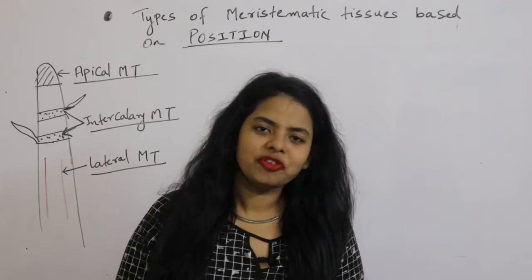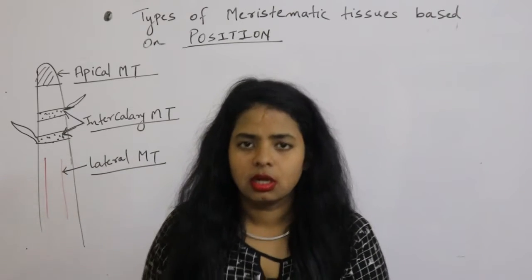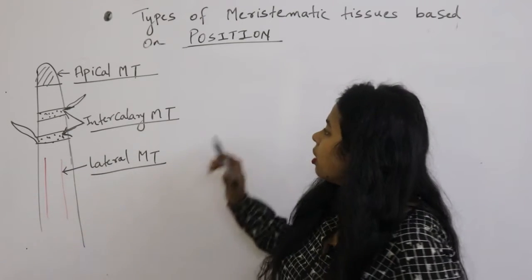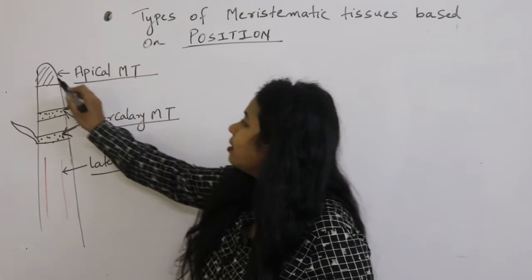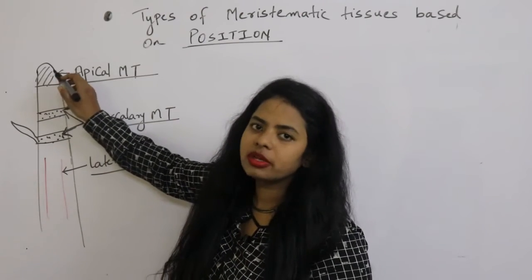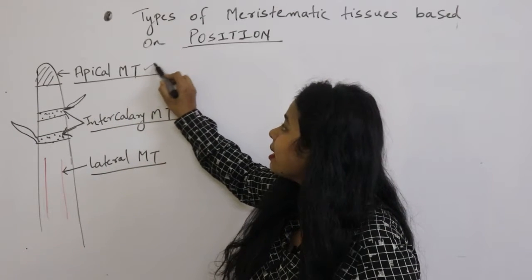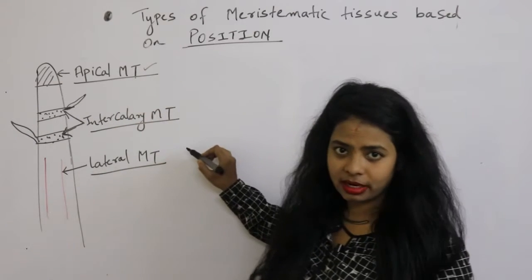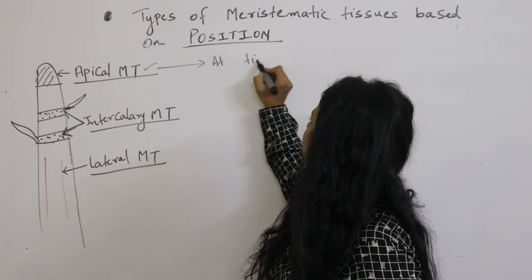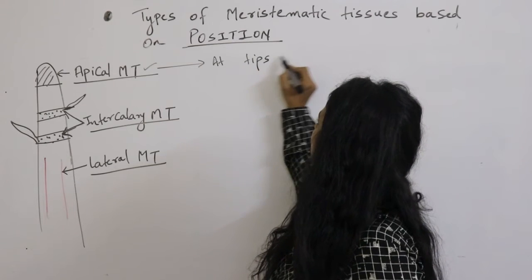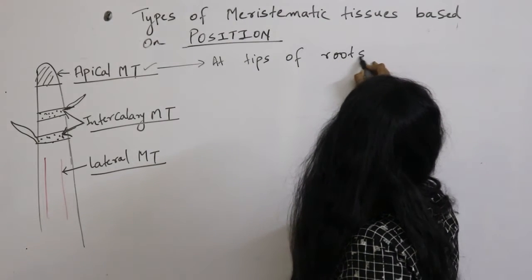Today we will be discussing the types of meristematic tissues based on position. If the meristematic tissue is present at the tips of roots or shoots, then it is called apical meristematic tissue. It is present at the tips of roots and shoots.